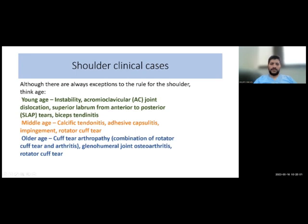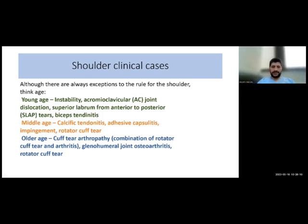For shoulder clinical cases, we are reviewing: young age — instability, AC dislocation, SLAP lesion, biceps tendinitis; middle age — calcific tendinitis, impingement; and older age — rotator cuff tear and rotator cuff arthroplasty.